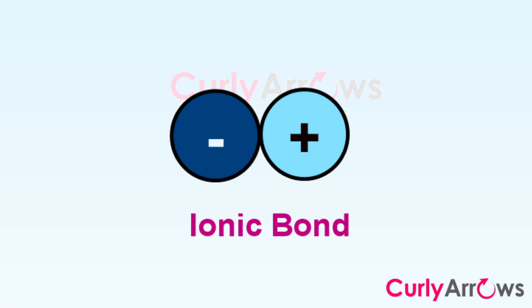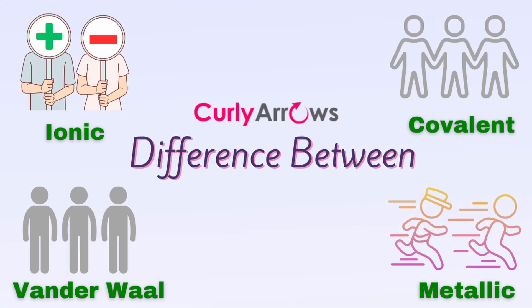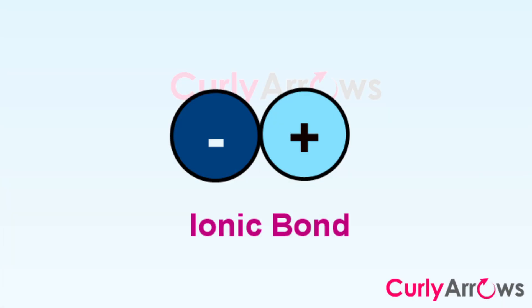The bond energy ranges from 400 to 4000 kJ per mole, which means an ionic bond can only break when this much energy is supplied. It is pretty high compared to other bond types, so ionic compounds have high melting and boiling points. Such ionic bond formation is seen between a metal and a non-metal.